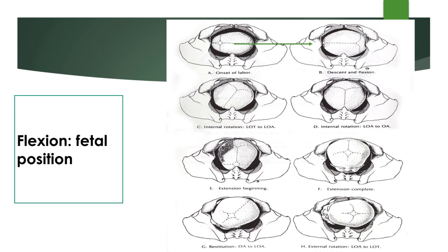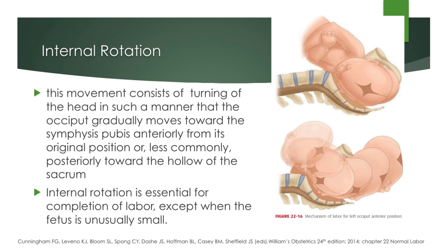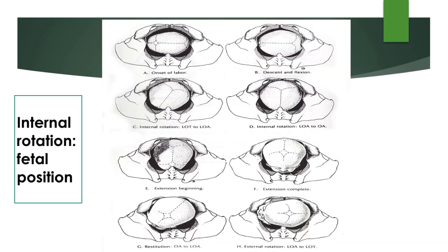With flexion, the fetal position is still the left or right occiput transverse position; however, the anterior fontanel is less palpable at this point. The next cardinal movement of labor is internal rotation. This movement consists of turning of the head such that the occiput gradually moves toward the symphysis pubis anteriorly from its original position, or less commonly, posteriorly toward the hollow of the sacrum. Internal rotation is essential for completion of labor except when the fetus is unusually small. With internal rotation, the fetal position is converted from left occiput transverse to an occiput anterior position.